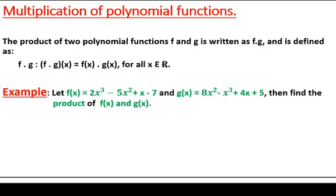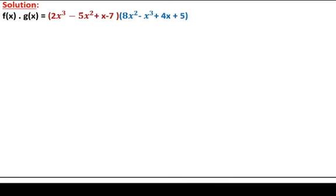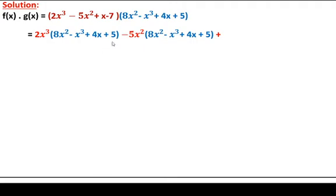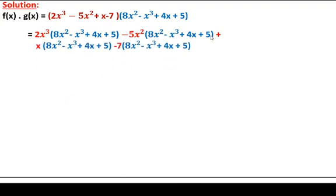Let's consider one example to end the session. We have two functions f and g, and we're asked to find their product. The product of any two functions is defined as f(x) times g(x). I'll use different colors so you can identify the two functions easily. When multiplying polynomial functions, we multiply every term of the first polynomial with every term of the second — so 2x cubed, minus 5x squared, x, and minus 7 are each multiplied with all terms of the second polynomial.